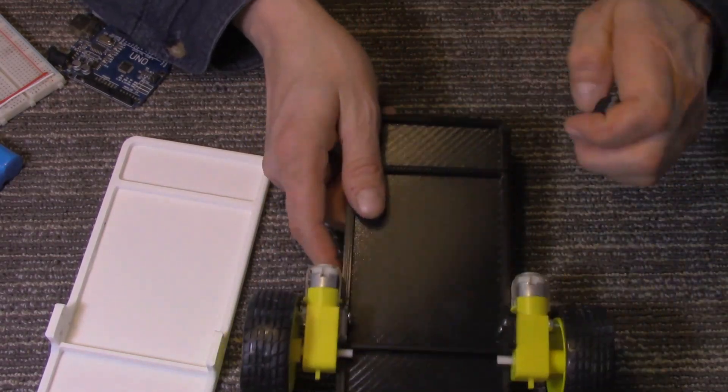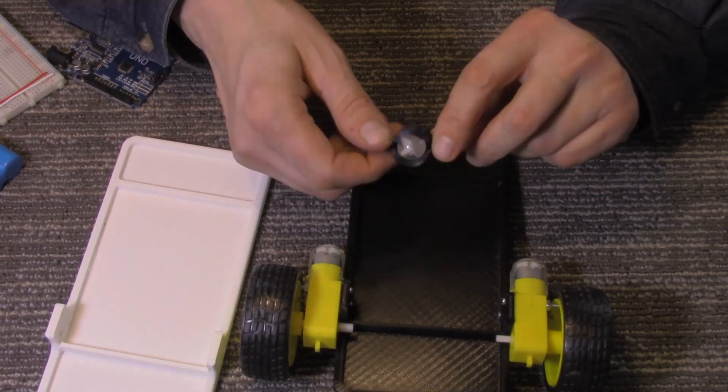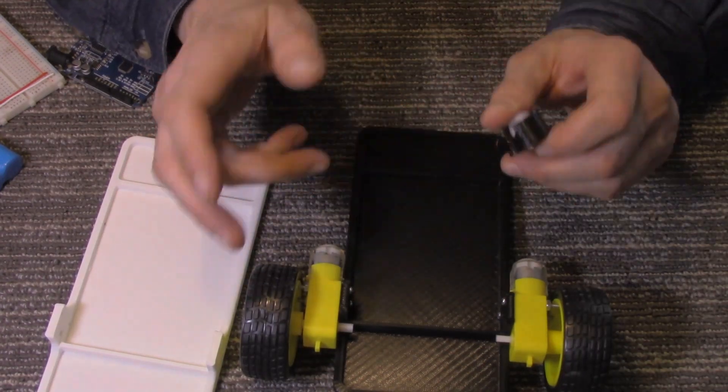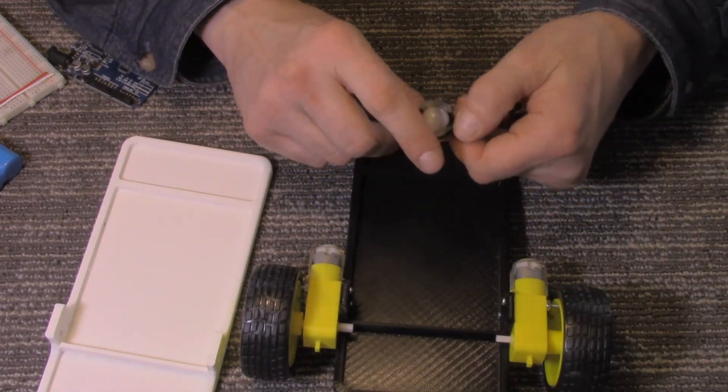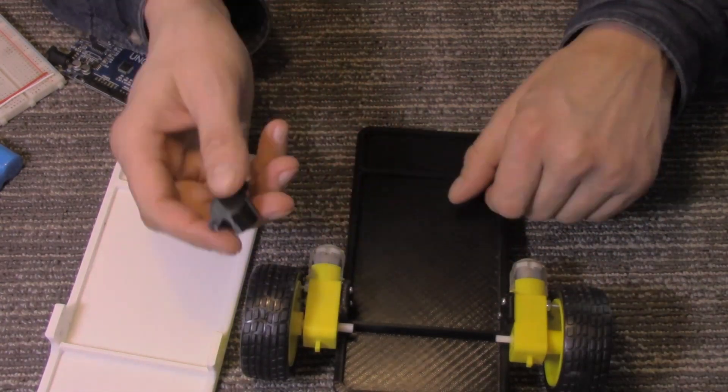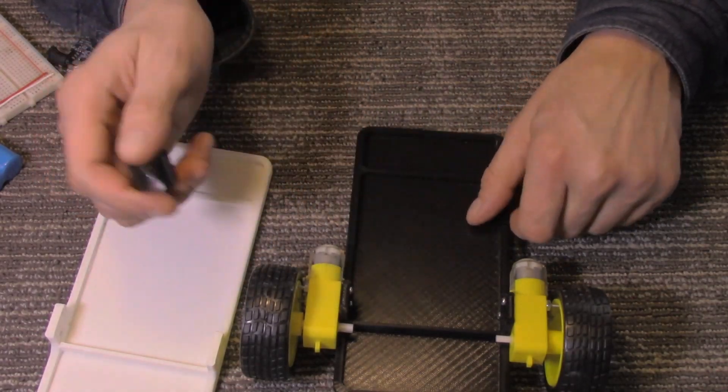And for the rear wheel, I'm using a marble caster. There are tons of these available on Thingiverse, which is also where you'll find the files for this. Just go ahead and pick one that suits you and print it out. There's a whole bunch of them. Just search for marble caster.